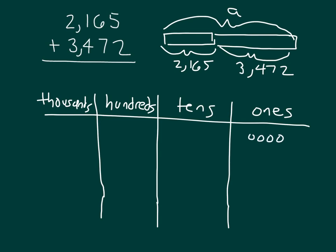Decomposing it and breaking it down, we have 5 ones, 6 tens, 100, and 2,000s.